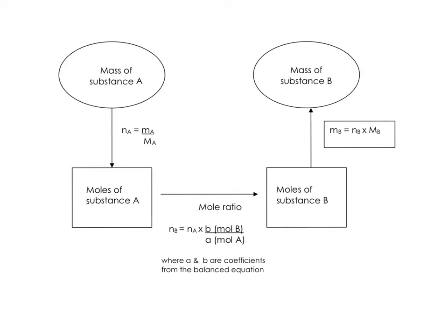This is a flow chart showing you this information. You're given the mass of substance A, so you use this formula: moles equals mass divided by molar mass to calculate the moles of substance A. Then using your mole ratio, you can convert from substance A to substance B. Once you have the moles of substance B, rearrange the equation to solve for mass of B, and that's your answer. A and B could be reactants or products. The question will tell you what you're looking for.